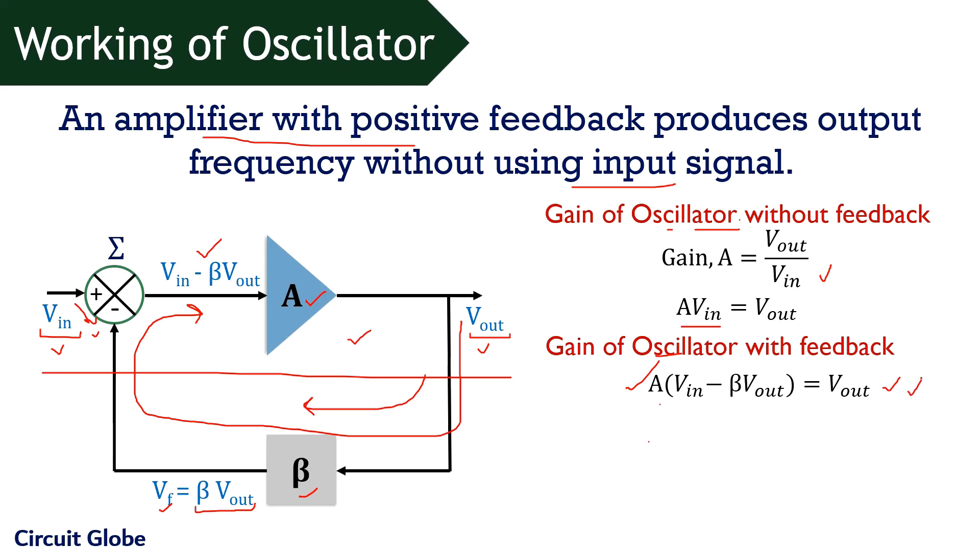Now, on simplifying this equation, we will get A V-in minus A beta V-out is equals to V-out. And further, we will get A V-in is equals to V-out of 1 plus A beta. As we know, that gain is V-out upon V-in, so writing the equation in the form of gain, we will get V-out upon V-in, that is the closed loop gain, as A upon 1 plus A beta, that is this particular equation.